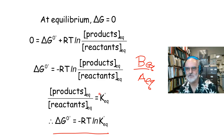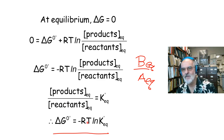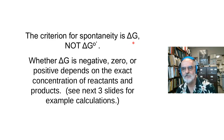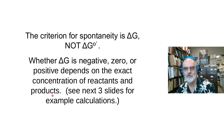The criteria for spontaneity is delta G, not delta G-naught. Delta G being negative, zero, or positive depends on the exact concentrations of reactants and products. We're going to do some calculations now to drive this message home.